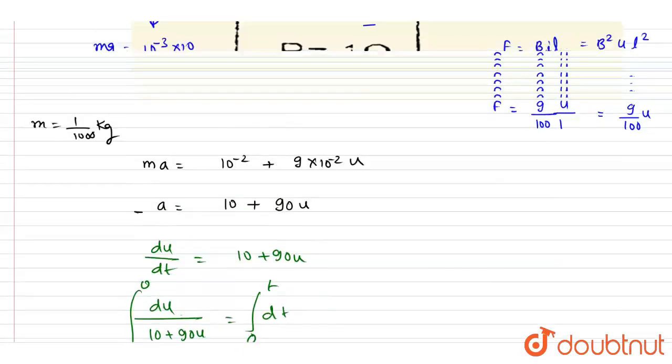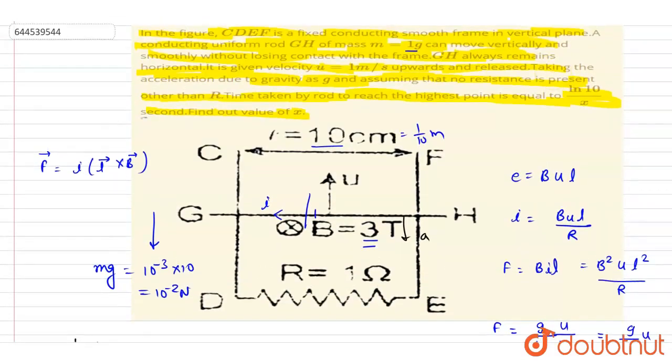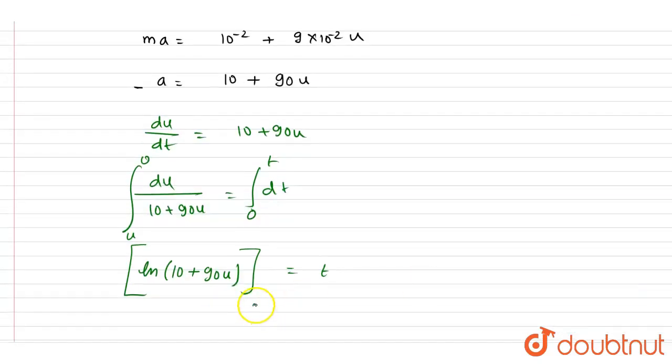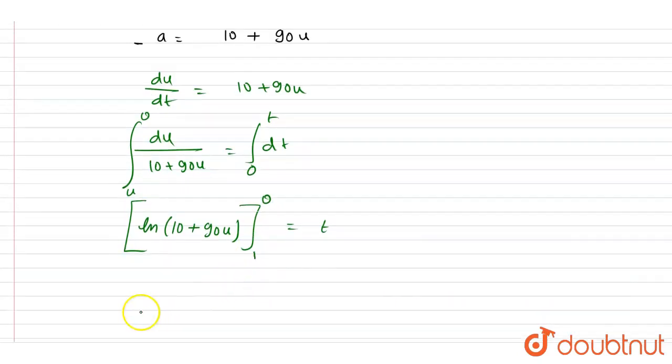So if you see, the initial velocity was 1 meter per second and finally it will be 0. So if you see here, at the highest position the u will be 0. At the highest position the u will be 0. So if you put the values now...